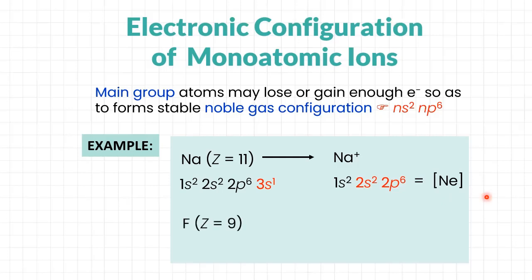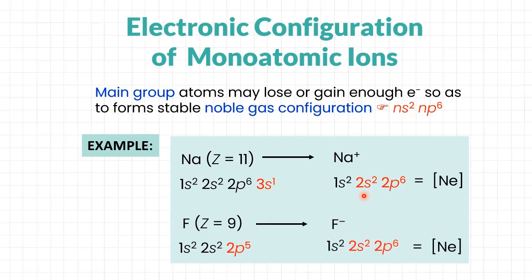Another example: neutral fluorine with proton number 9 has SPDF notation 1s², 2s², 2p⁵. To achieve noble gas configuration, we choose whether it is easier to remove all seven electrons from n=2 or to simply add one electron to completely fill 2p⁶. It is much easier and requires less energy to add only one electron to the fluorine atom. Therefore, the most stable ion formed is F⁻ with electronic configuration 1s², 2s², 2p⁶, which can also be written as the neon configuration.